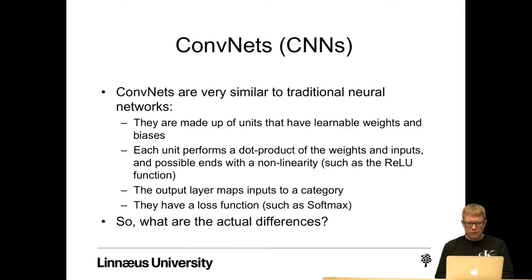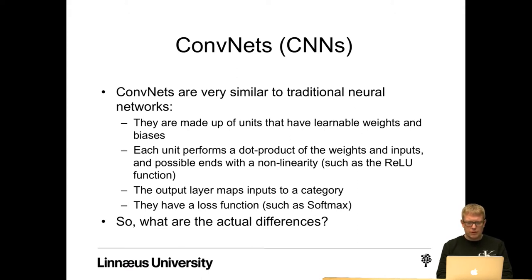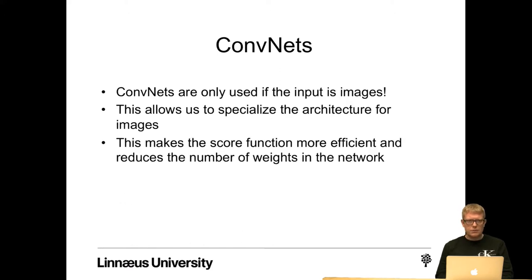The convolutional neural network — or ConvNets or CNNs — are quite similar to traditional neural networks. They are made up of units that have learnable weights and biases. Each unit performs a dot product of the weights and inputs and possibly ends with a non-linearity such as the ReLU function. The output layer maps inputs to a category, and we have a loss function such as softmax. The actual difference is that in ConvNets, we assume that the input is images, and this allows us to specialize the architecture for images, making the score function more efficient and reducing the number of weights in the network.